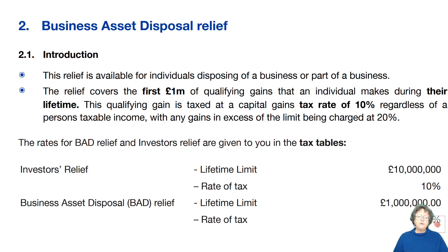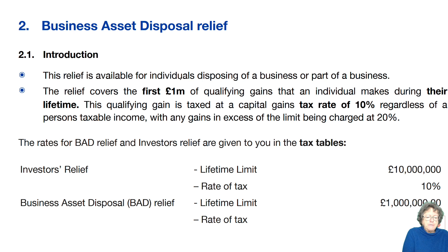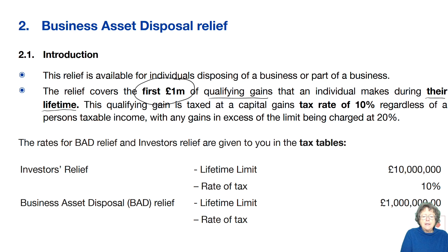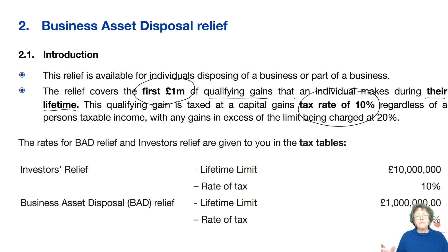This relief is available for individuals who dispose of either all or part of their business. Basically, the first £1 million of any qualifying gains that an individual makes in their lifetime — it's a lifetime limit — they only pay tax at 10%, regardless of what their income tax position is. Any gains in excess of that will go straight to the higher rate.